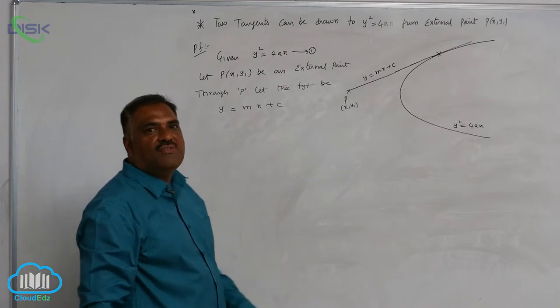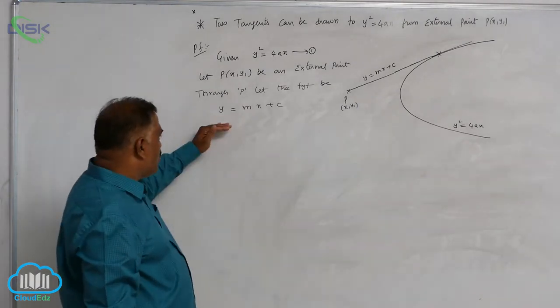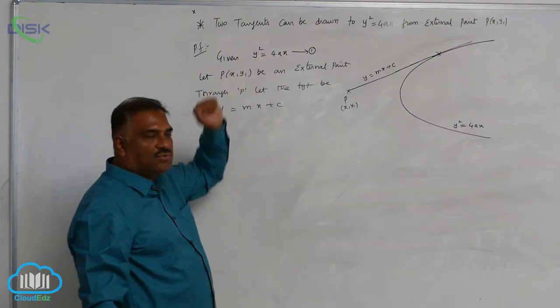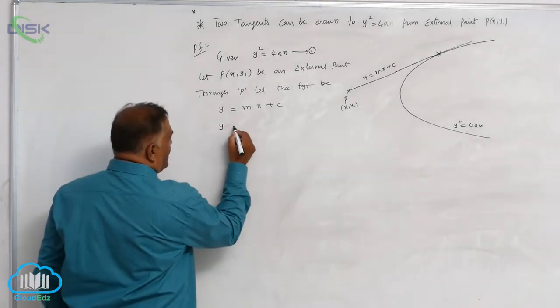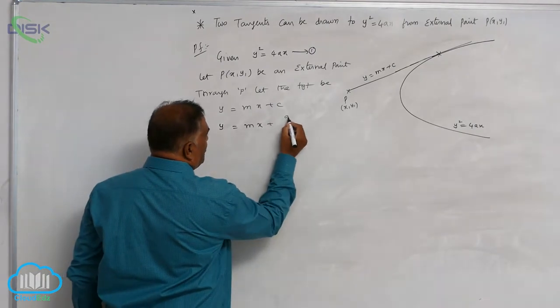We are familiar with one result. When y equal to mx plus c is a tangent to y square equal to 4ax, c is equal to a by m. So y is equal to mx plus a by m.